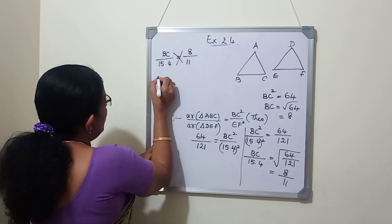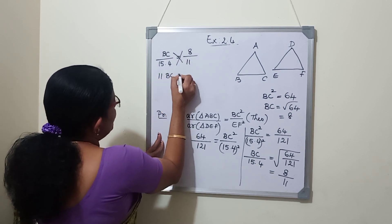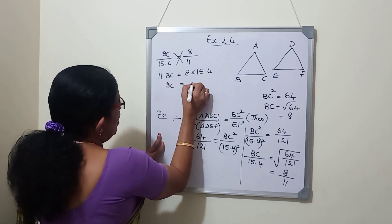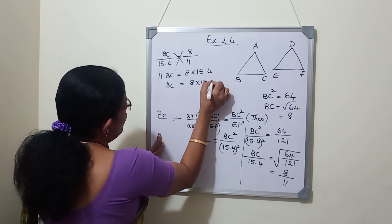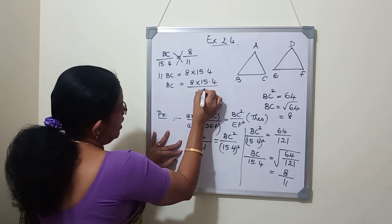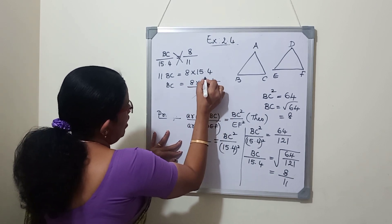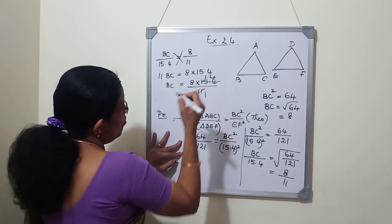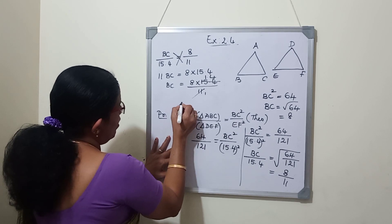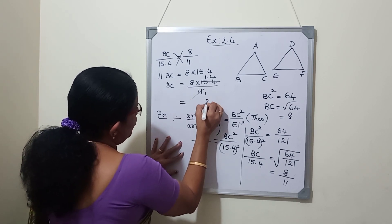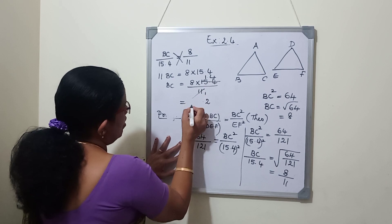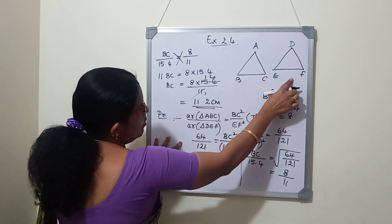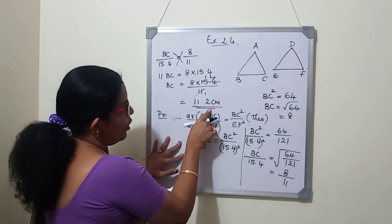Cross multiply: 11 BC equals 8 into 15.4. BC equals 8 into 15.4 divided by 11. Cancelling 11: 15.4 divided by 11 gives 1.4. Then 8 multiplied by 1.4 equals 11.2. So the length of side BC corresponding to side EF is 11.2 centimetres.